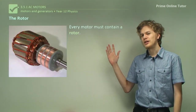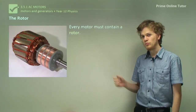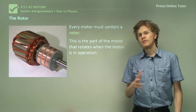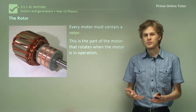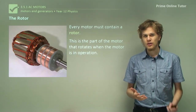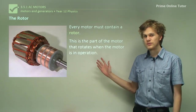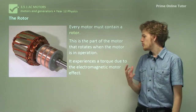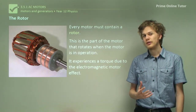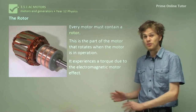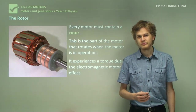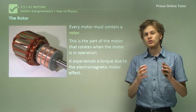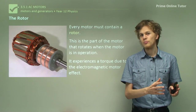Every motor must contain a rotor, which might look something like this. A rotor is the part of the motor that spins. If there's no part of the motor spinning then it's not really a motor. The rotor experiences a torque due to the electromagnetic motor effect. If it's not due to the motor effect then we don't have an electric motor. We use electricity to produce a torque on the rotor of the motor to make it turn.